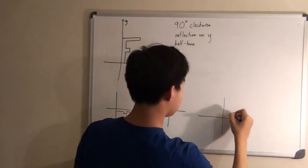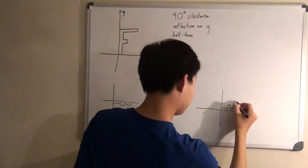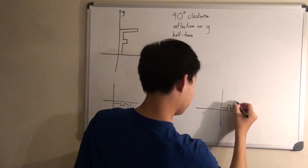So we do that. So this would be 90 degrees, and this would be 180, giving us something like that. And this would be our final answer, which is also E.